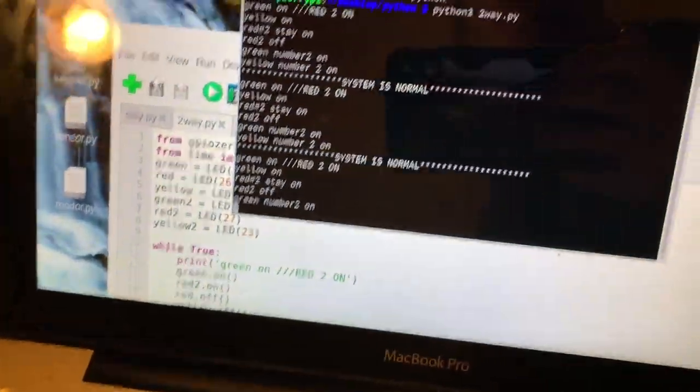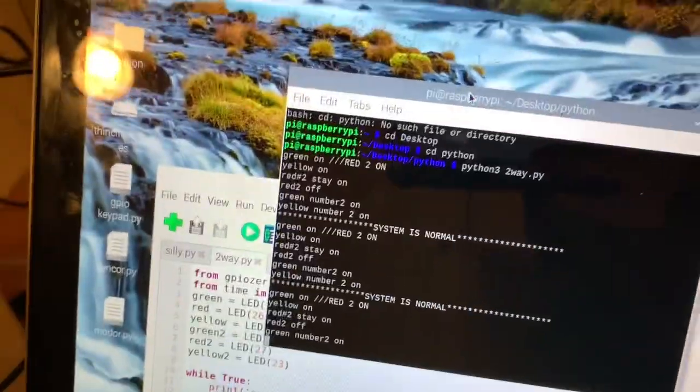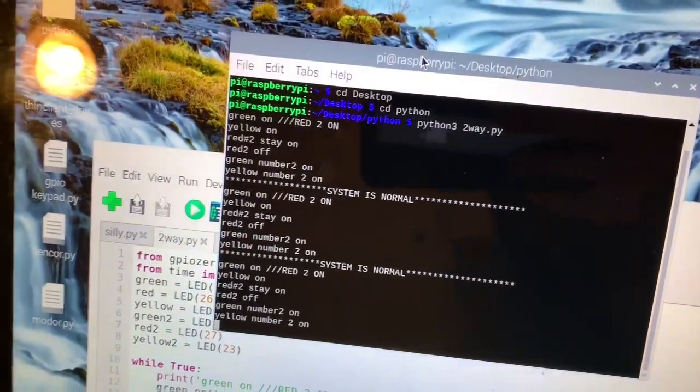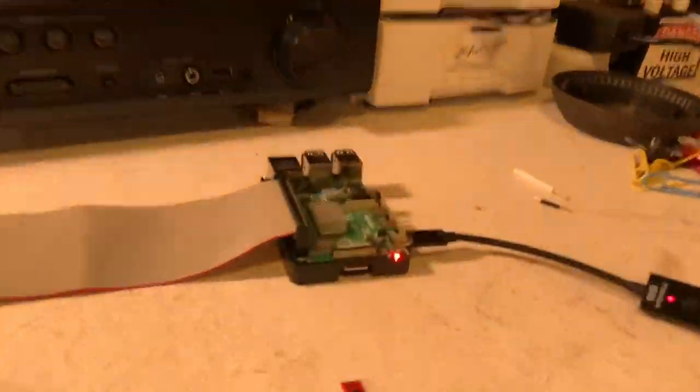Red two stay on and then so now red is on. Green number two is on. You can see that it says it in the script. So that's what the whole print thing did in the script. I just wanted to add that for some cool effect basically, guys.